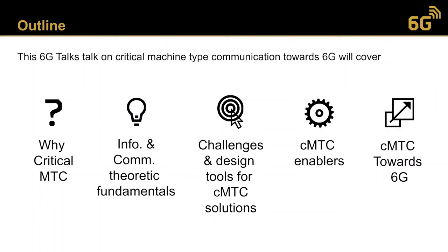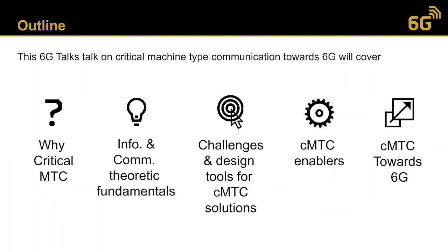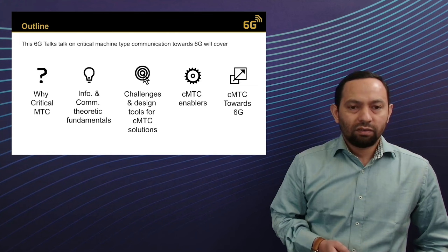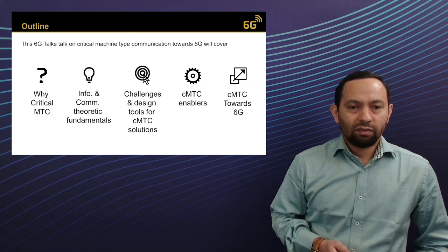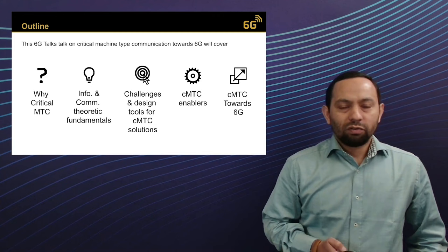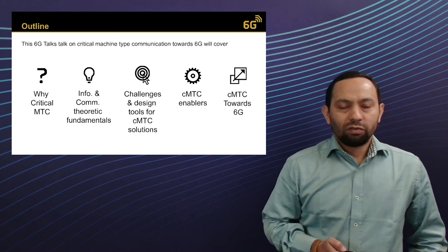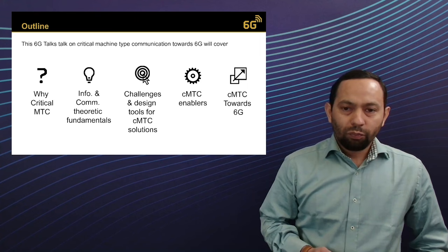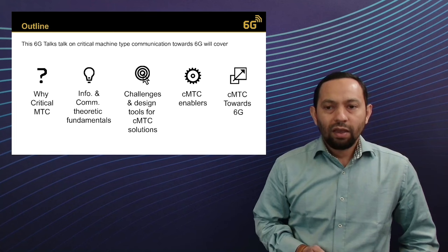This is the brief outline of the talk. First we will try to answer why critical machine type communications, why we need URLLC and how it will evolve towards 6G. Then we look into the information and communication theoretic fundamentals of critical machine type communication. Thereafter we look into challenges and statistical tools for designing critical MTC solutions, followed by some of the enablers of CMTC, and finally an outlook towards 6G.